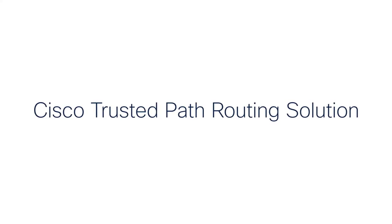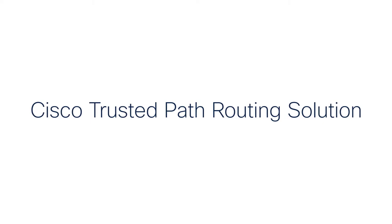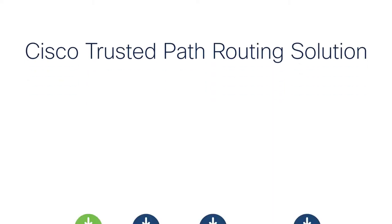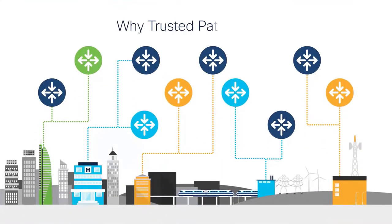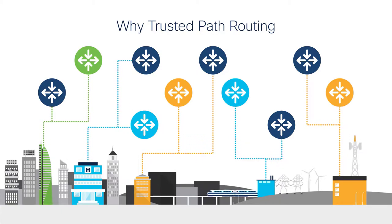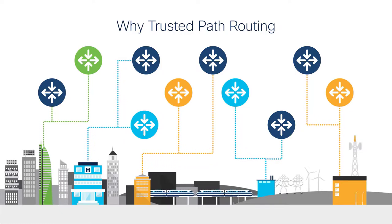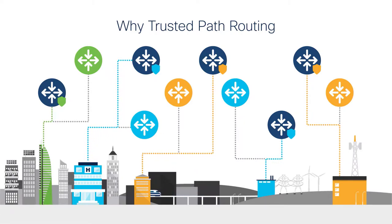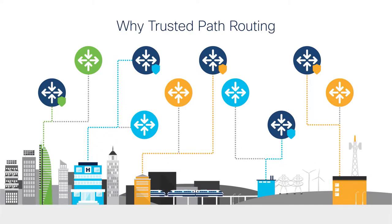Welcome to this demonstration of the Cisco TrustedPath routing solution. Routing is one of the most important parts of the infrastructure that keeps a network running, and it is absolutely critical that devices have maintained their hardware and software integrity. Customers who depend on critical infrastructure require that their sensitive data flows transport across only trustworthy network devices.